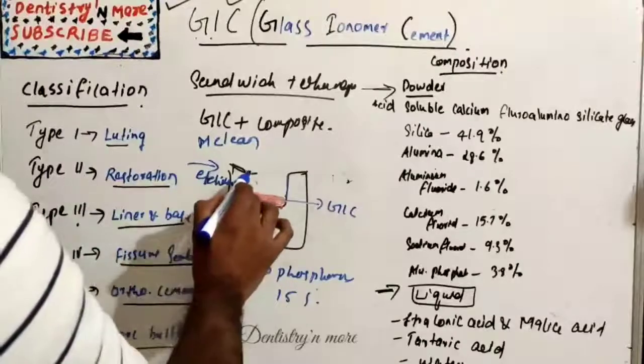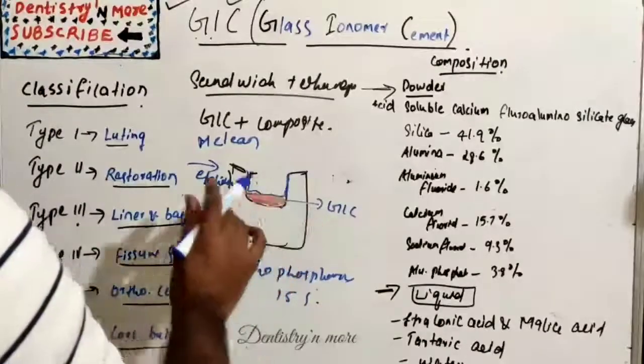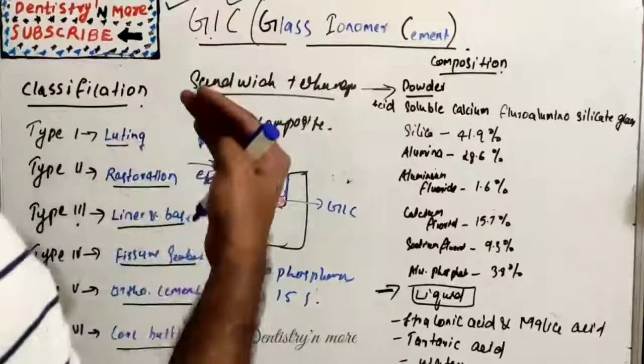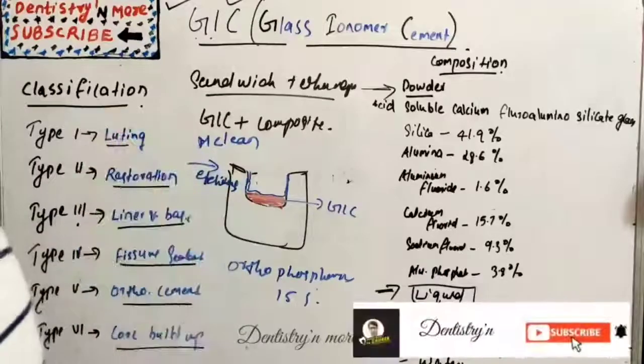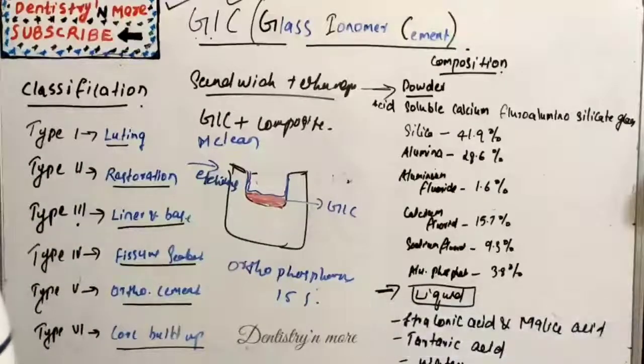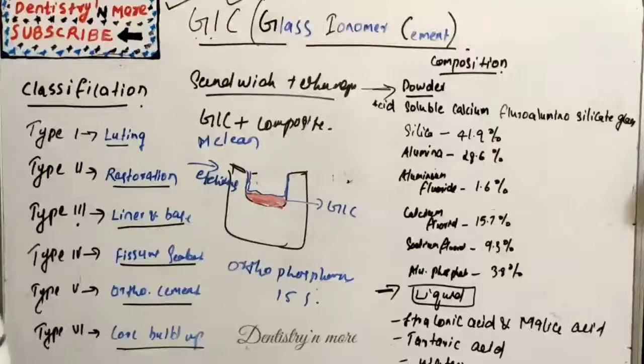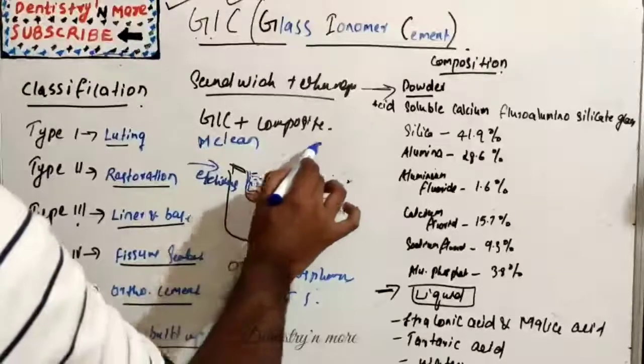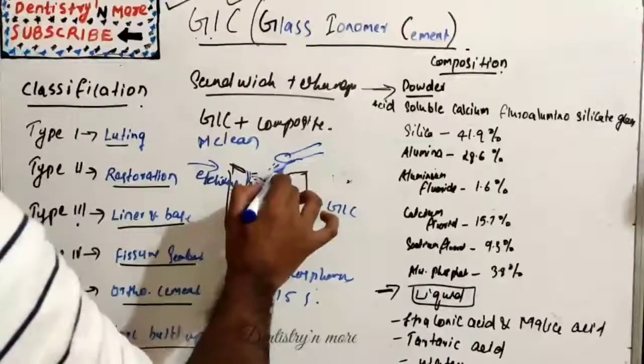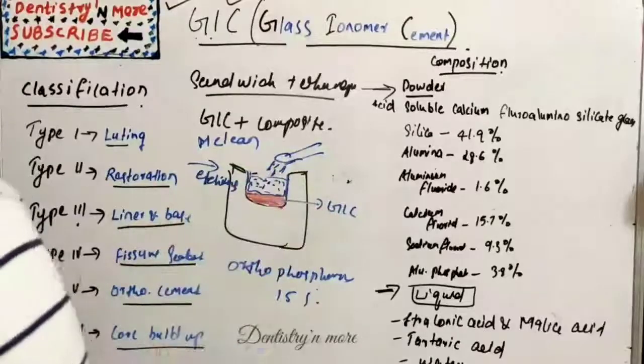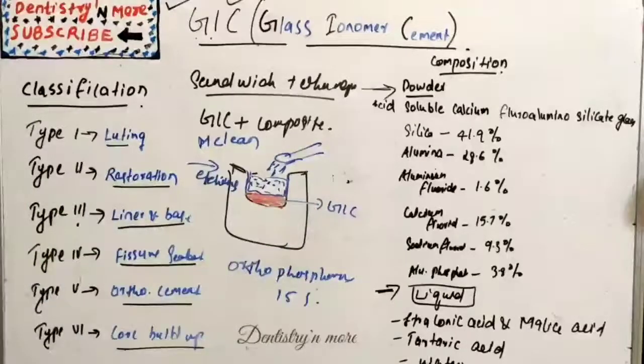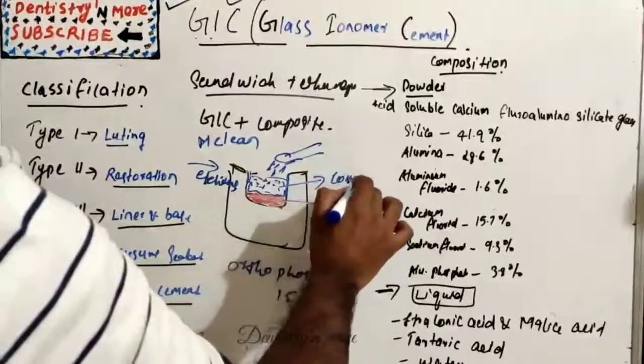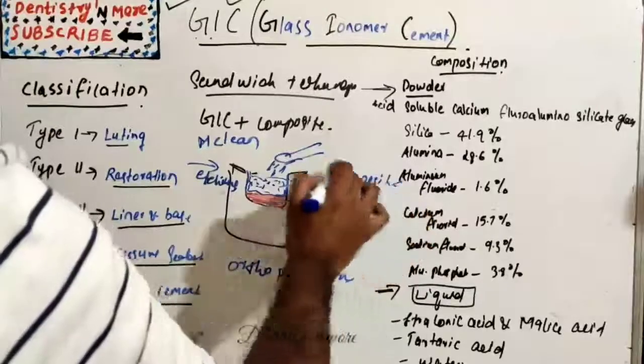Then we apply a thin layer of bonding agent because composite placement requires a prior bonding agent, then only the mechanical bond will be happening. And finally place the composite resin over the GIC. Here we apply the composite and using a curing light we cure the restoration. So the deeper section has GIC and above it has composite. This is the sandwich technique.